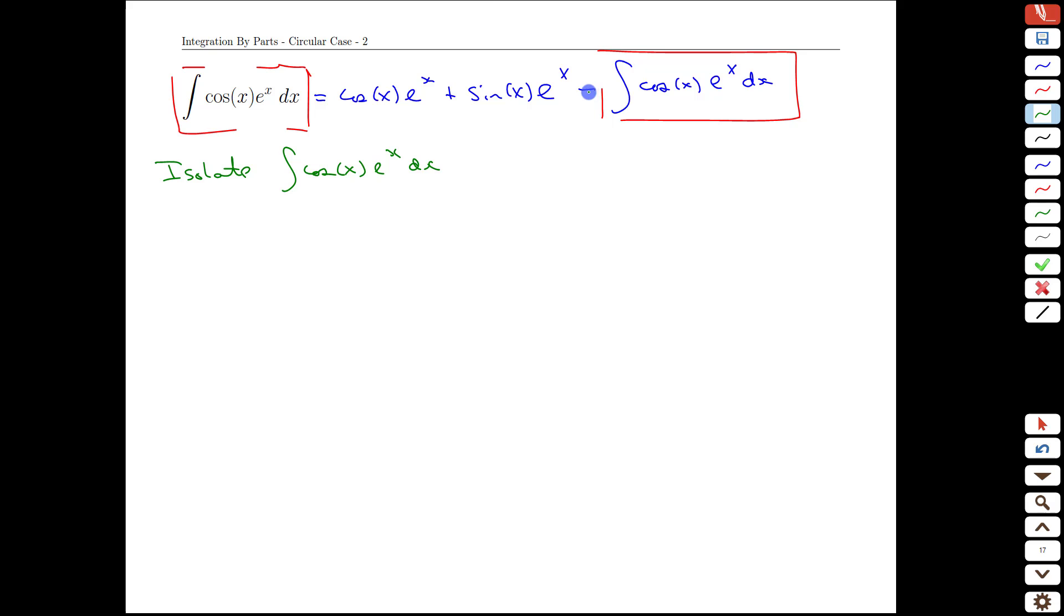How do we do that? Well, notice there's a minus sign here, so if we bring that to the other side, we are going to get exactly two of the integrals of cos(x) e^x dx. And we leave the right hand side the same. All we're doing is rearranging like a normal equation.